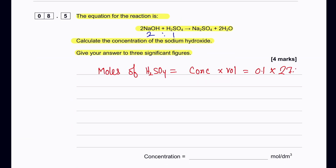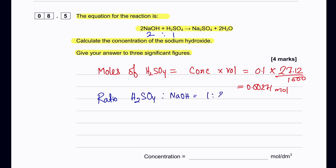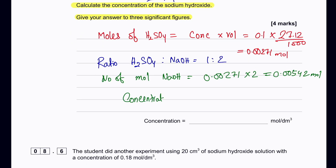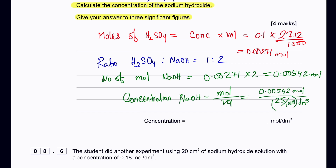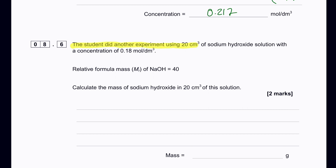Once you have the number of moles of sodium hydroxide, use the volume of sodium hydroxide (25 cm³) and the moles to calculate its concentration. The student then did another experiment using 20 cm³ of sodium hydroxide at 0.118 mol/dm³, with the relative formula mass of NaOH = 40.